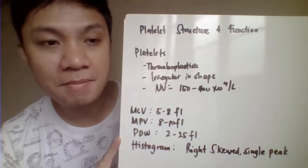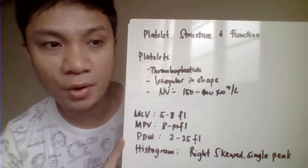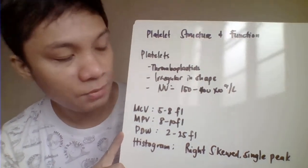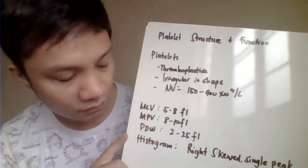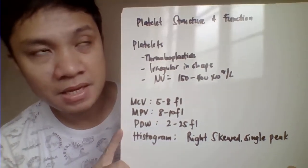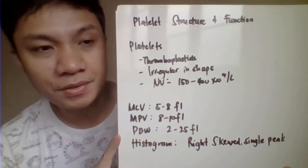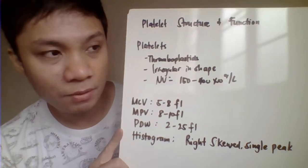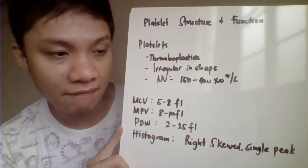The normal diameter of a platelet is 2 to 3 micrometers, with an average of 2.5 micrometers in diameter. The normal platelet count values are 150,000 to 400,000. The mean corpuscular volume of platelets is 5 to 8 fL, and the mean platelet volume (MPV) is 8 to 10 fL.